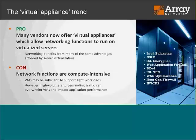There are pros and cons to virtualizing networking functions. On the pro side, many vendors — Array Networks included — now offer virtual appliances that allow networking functions to run on virtualized servers. You can find load balancing, global server load balancing, SSL offload and encryption, web app firewalls, DDoS, VPNs, WAN optimization, firewalls, IPS, and IDS running in VMware, Hyper-V, Xen, or KVM. Networking begins to benefit from the same advantages as server virtualization.